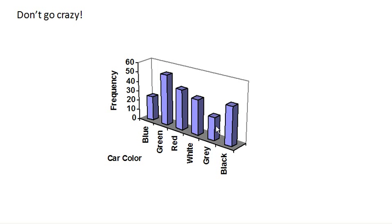Here is the car color data we were looking at earlier, and here it's done in a 3D bar graph. The problem with this graph is that because of the perspective, it's almost impossible to read. It's really hard to tell which of these bars is actually larger when it is on this slant, and so this is really a bad graphical representation. It's really hard to read.